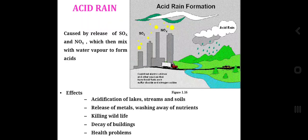Acid rain is caused by release of sulfur oxides and nitrogen oxides which mix with water to form acids. Effects of acid rain include acidification of lakes, streams and soils, release of metals, washing away of nutrients, killing wildlife, decay of buildings, and health problems.